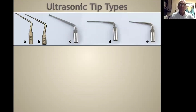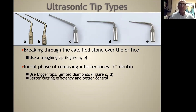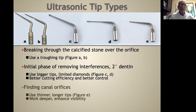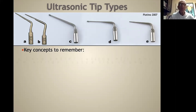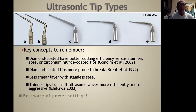There are many ultrasonic units on the market and they're all very good. We use basically five tip types. Tips for troughing are usually what we call 9D, 14D, or 15D. In the initial phase of removing interferences where there's secondary dentin, we use bigger tips. Diamonds have better cutting efficiency and better control. For canal orifices, we use thinner, longer tips, which work deeper with enhanced visibility. Key concepts: diamond-coated tips have better cutting efficiency versus stainless steel or zirconium nitride-coated tips. Diamond-coated tips are more prone to break. Less smear layer is removed with stainless steel tips. Thinner tips transmit ultrasonic waves much more efficiently and are more aggressive, as shown by Izakawa in 2003.